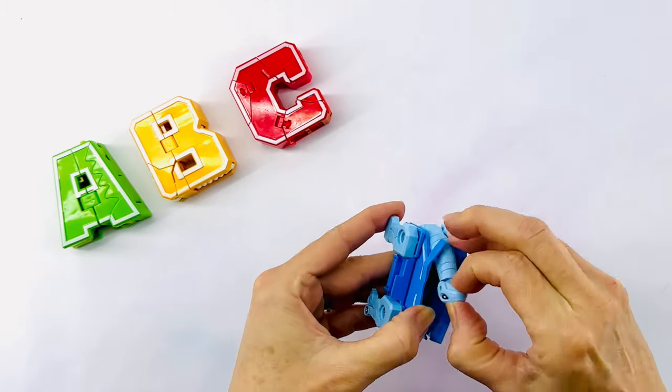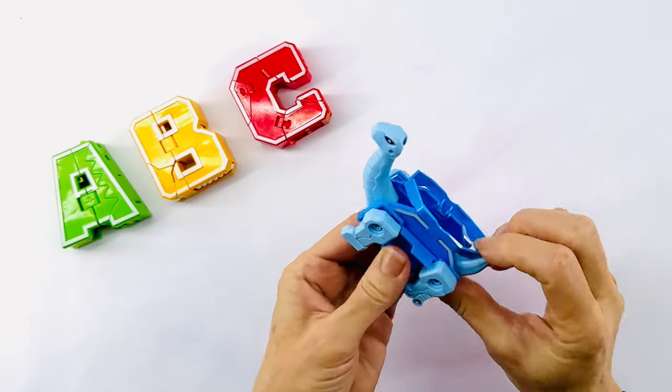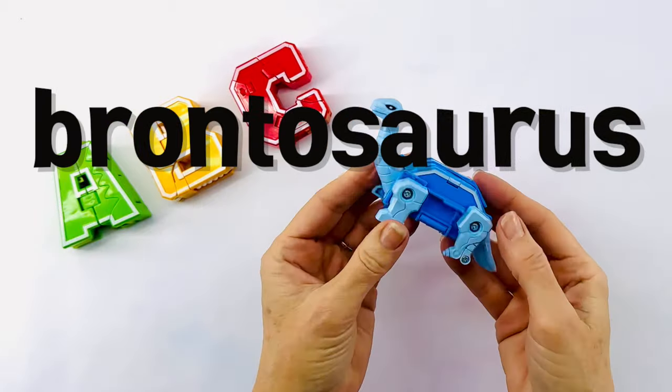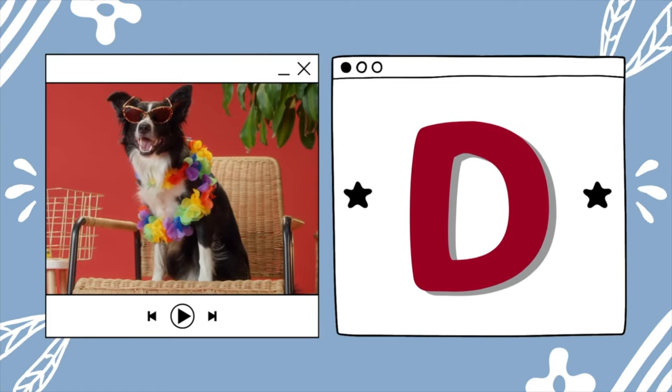And if I open up the back, it has a long neck. I think I know what this is. And the tail, it's a brontosaurus. The letter D stands for dog. That dog looks like he's going on vacation.